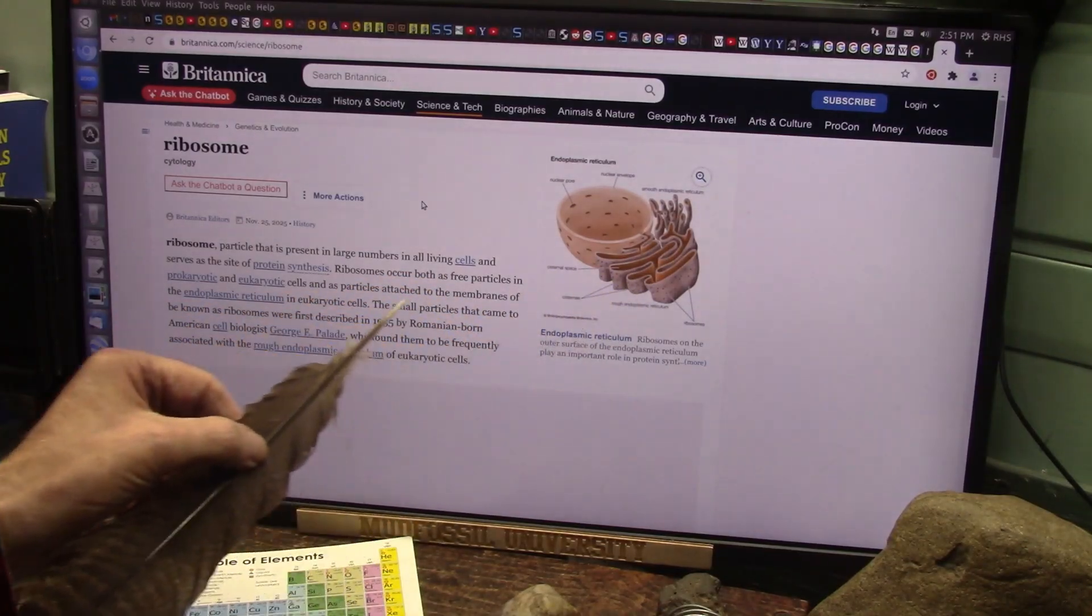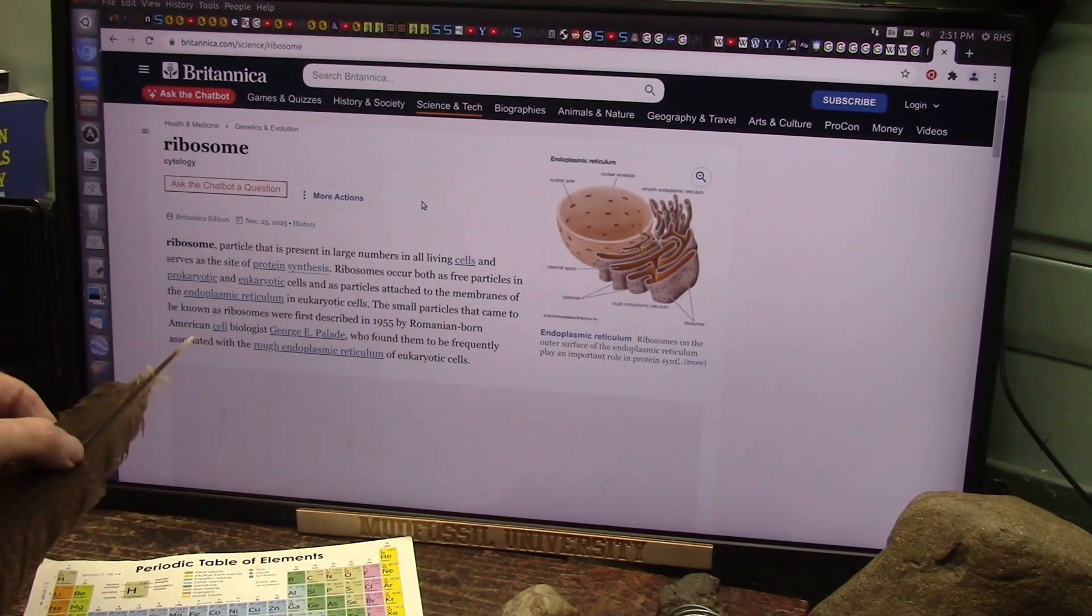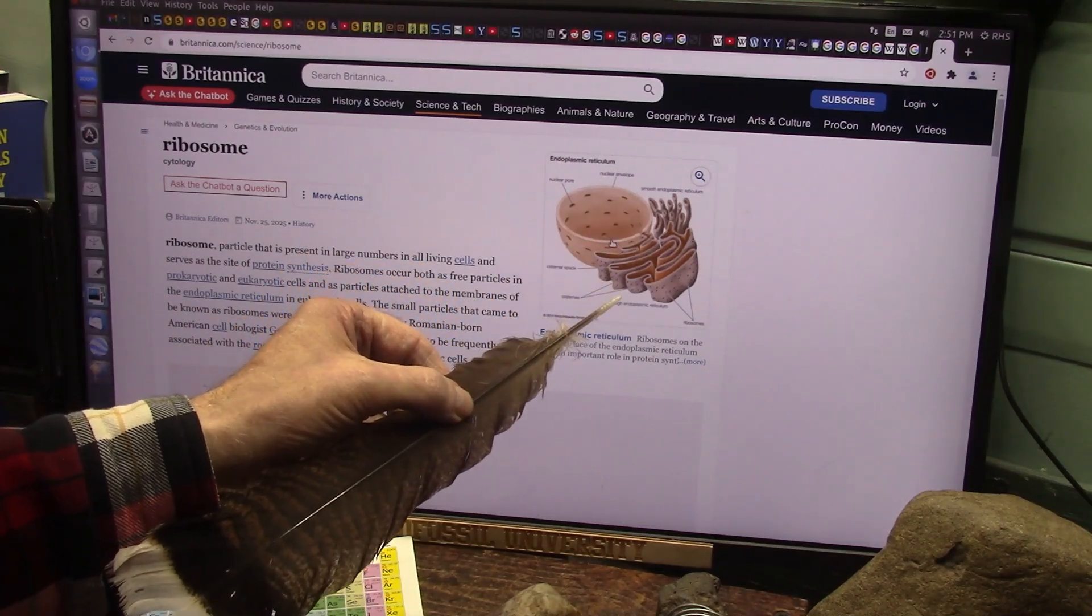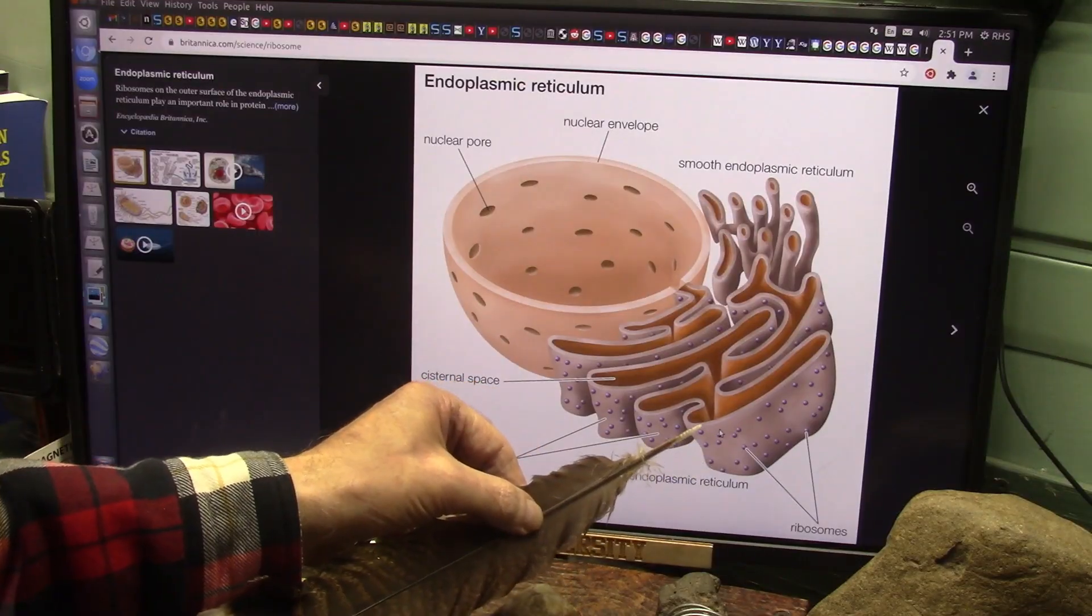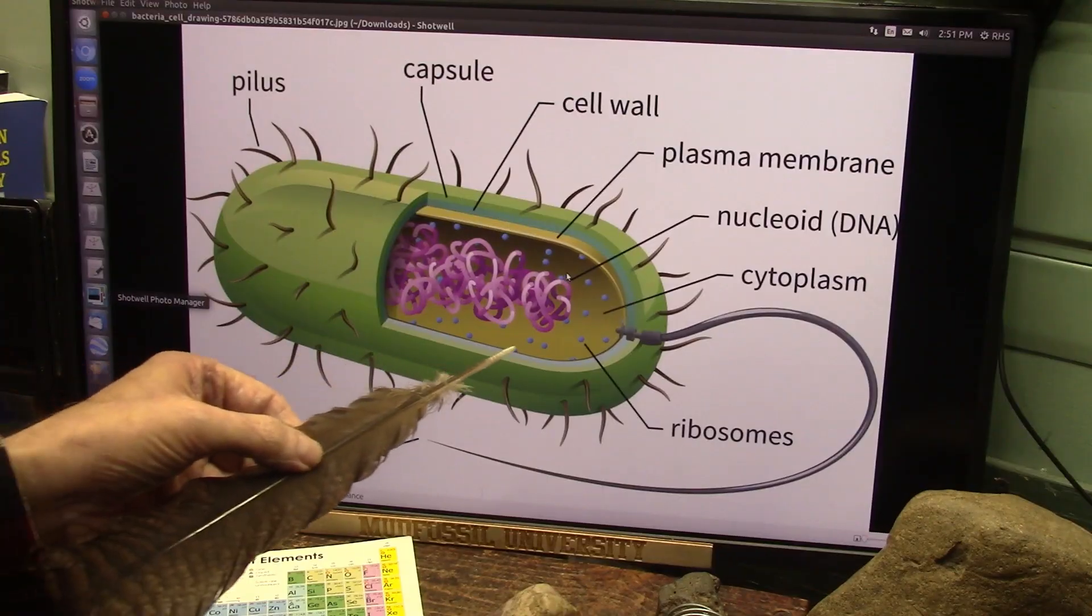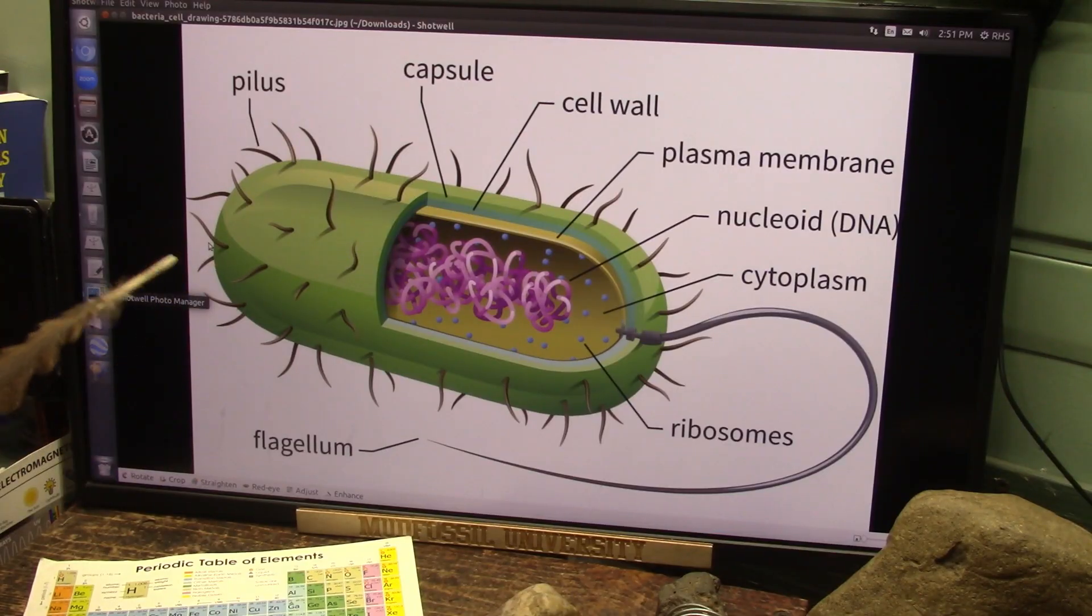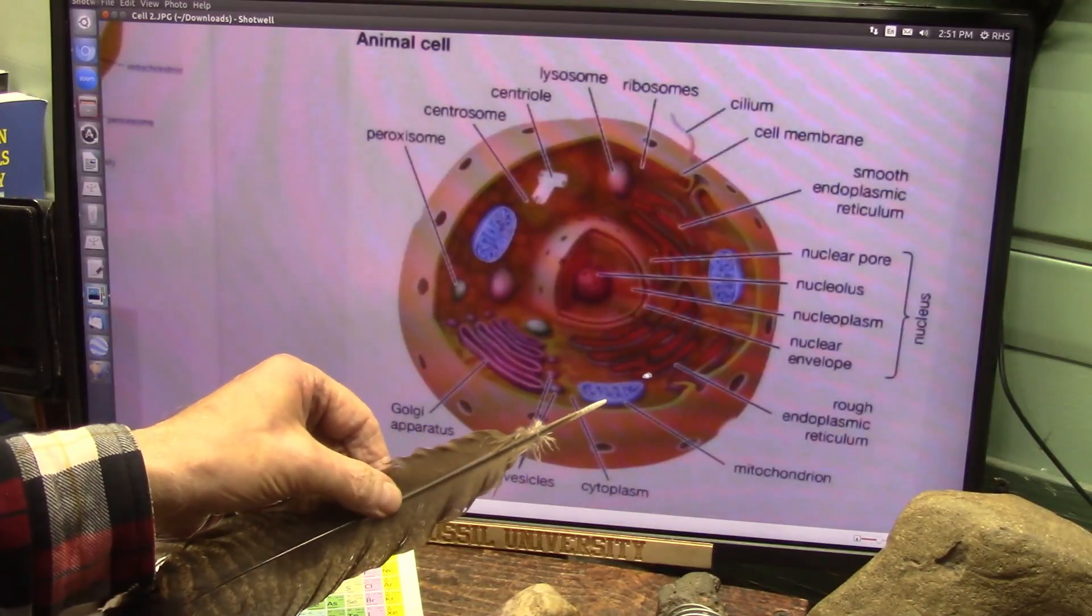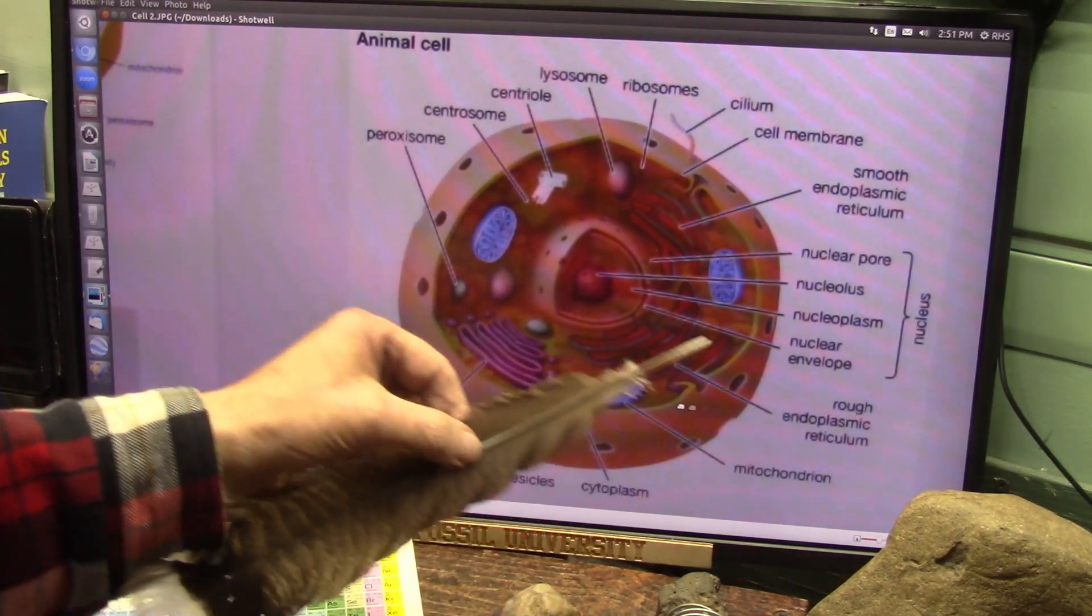Small particles that came to be known as ribosomes were first described in 1955. Now I don't know how he saw these because you can have in one single cell, literally millions of these little balls. That's what they say. That's where the ribosomes come out and they go floating around until they attach to the endoplasmic reticulum or somewhere. The endoplasmic reticulum is rough because there's so many on here.